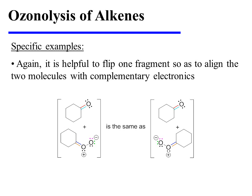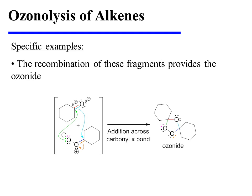Recall that the mechanism for the recombination of these fragments will be more clear if we flip one fragment relative to the other, so as to align the molecules with complementary electronics. After reorganizing the fragments in this fashion, we can easily appreciate how the anionic oxygen would be attracted to the partially positive carbonyl carbon. That attack displaces the carbonyl pi bonding electrons, which are used to attack the other carbon involved in a double bond to oxygen. Finally, this displaces the orange pi bonding pair of electrons onto the positive oxygen, thereby neutralizing its charge.